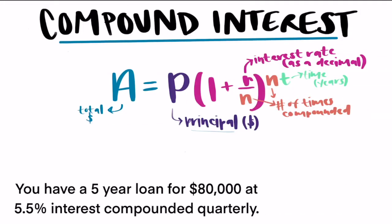So if you have a five-year loan for $80,000 at 5.5% interest compounded quarterly, and then we want to find the total amount of money we would end up paying on that.